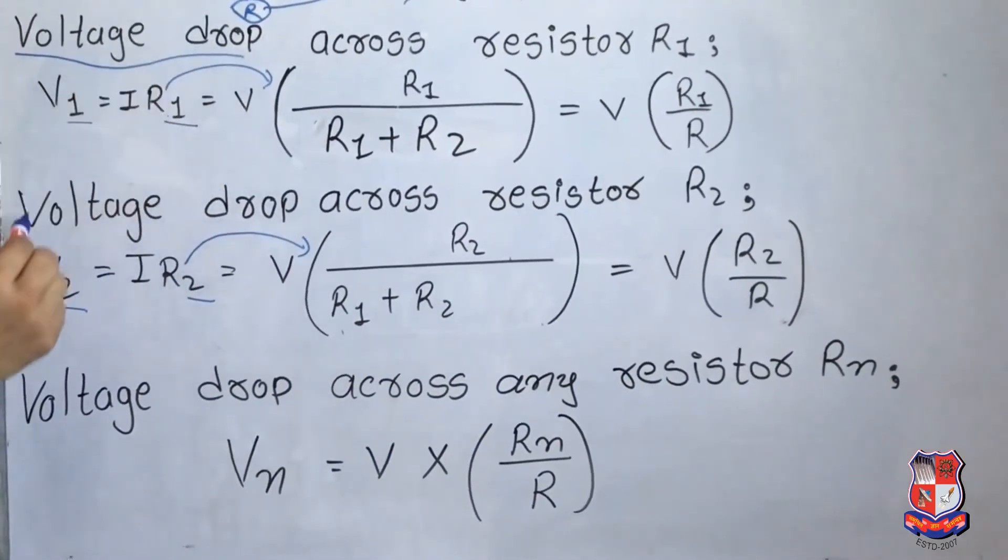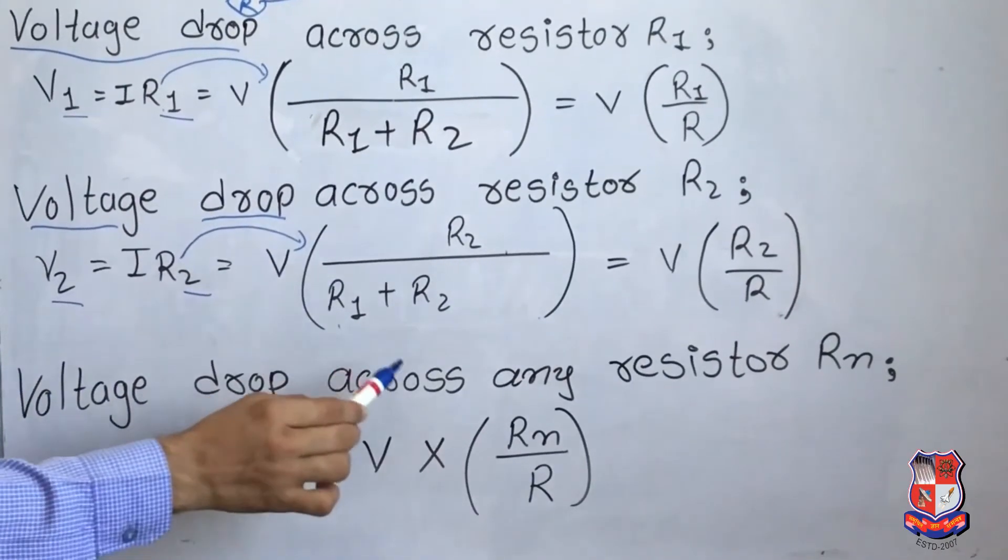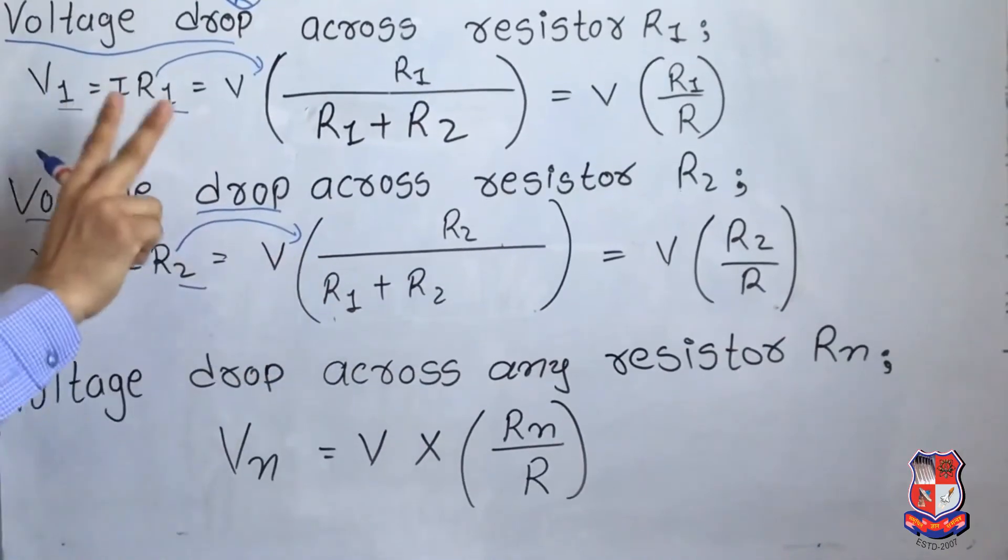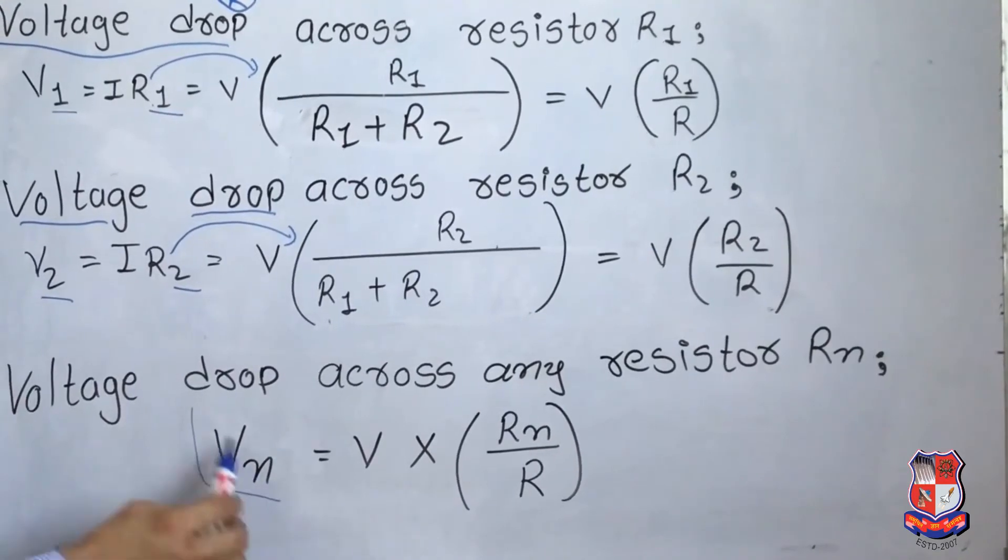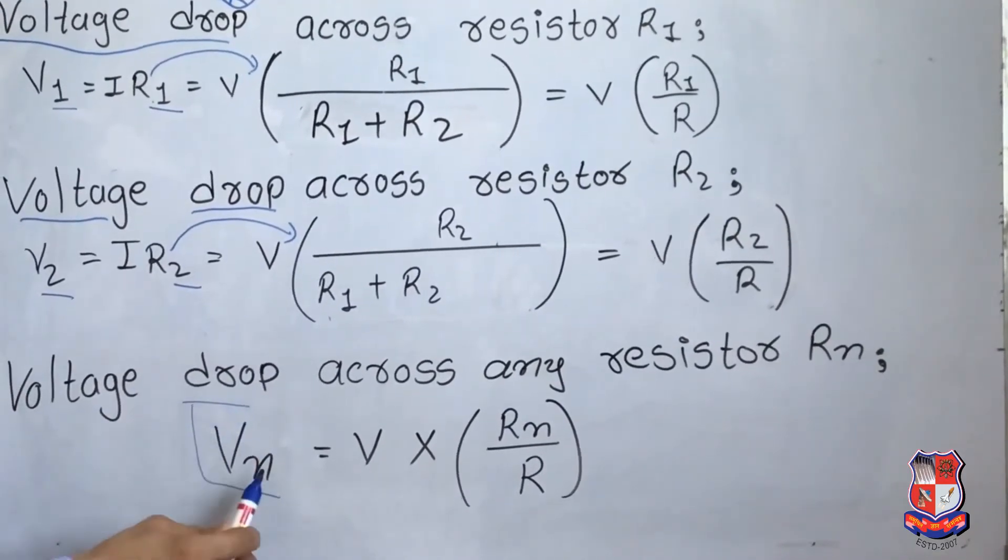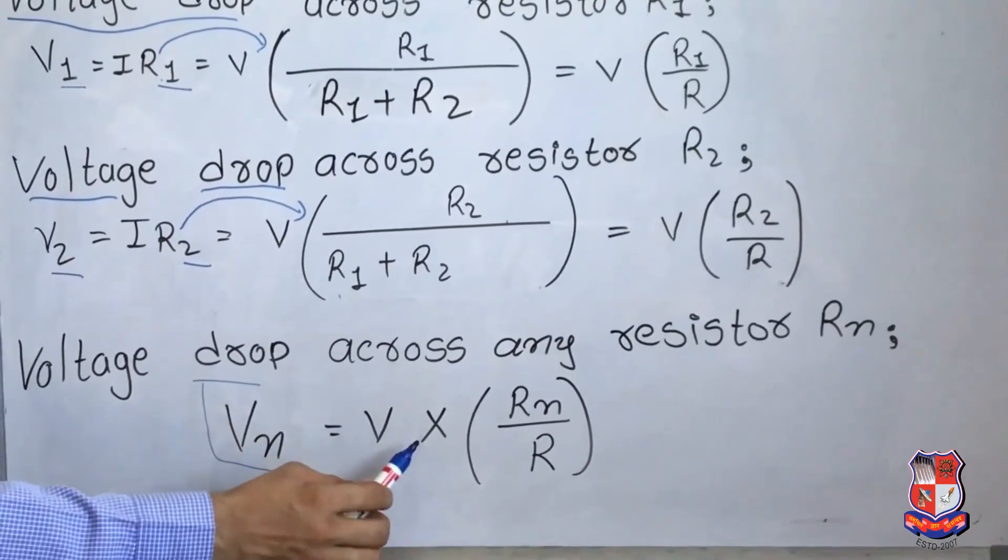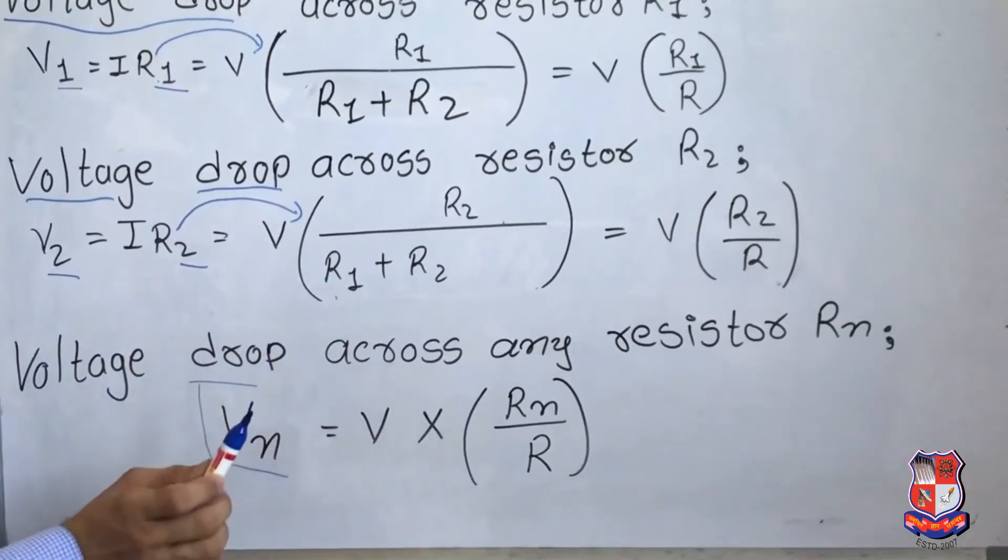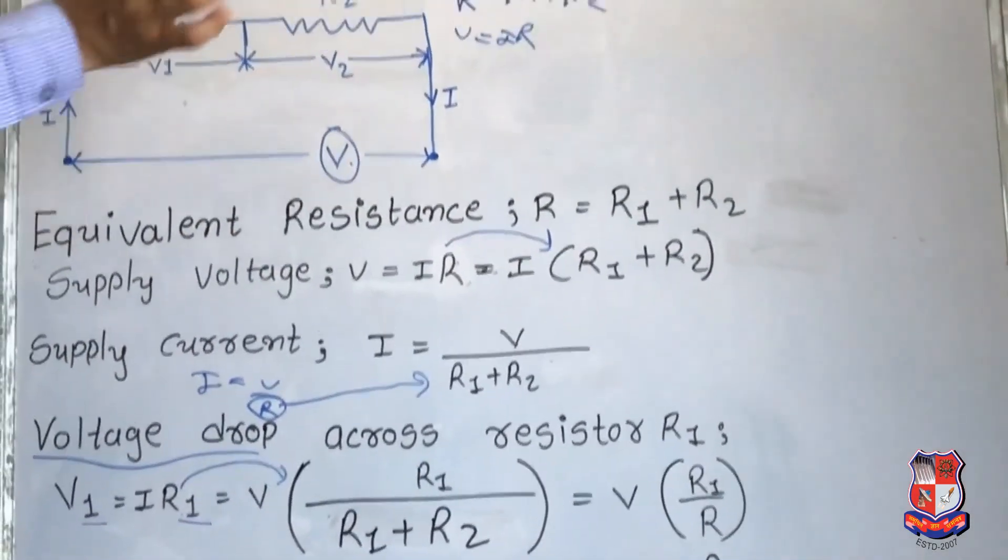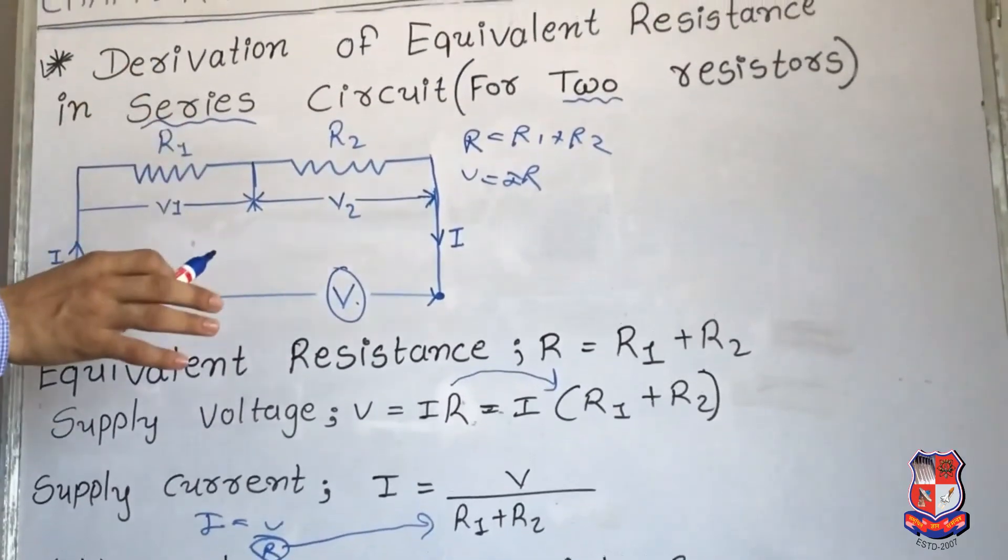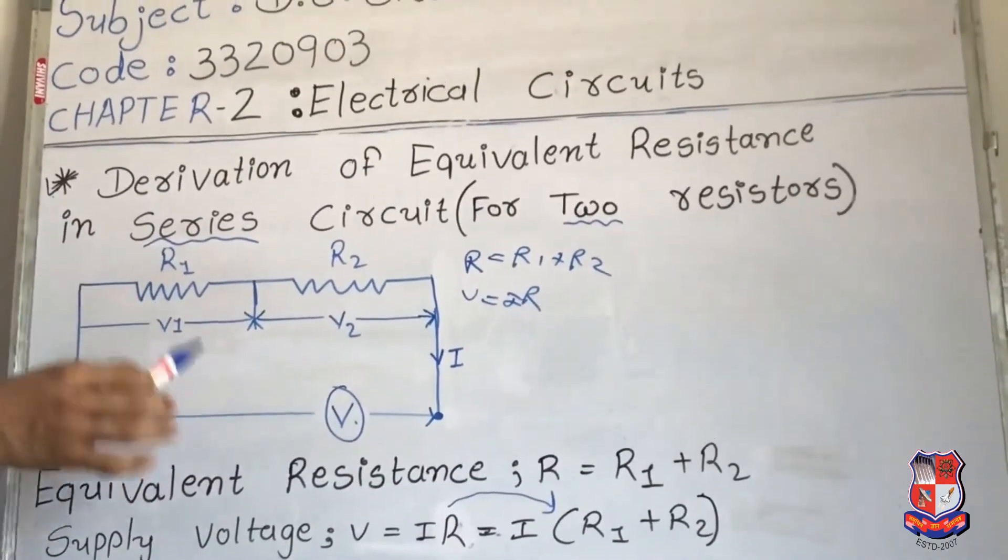Voltage drop across any resistor Rn. Whatever resistance is there, 2 are given, 3 will come, 4 will come, however many resistances. So the final equation is Vn, number of voltage, is equal to V into number of resistance divided by R. So this is your basic equivalent resistance equation, in which there are 2 resistances or 3 resistances. But the formula remains the same. The pattern remains the same.